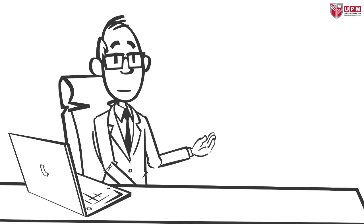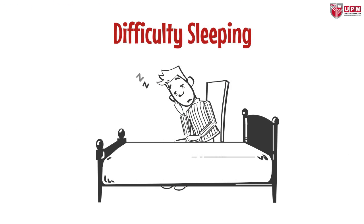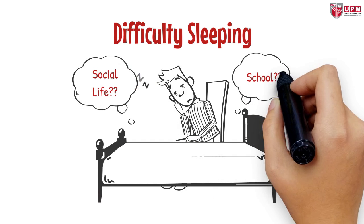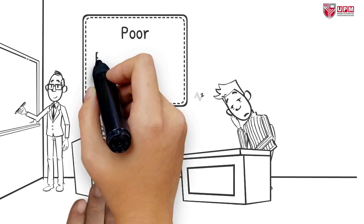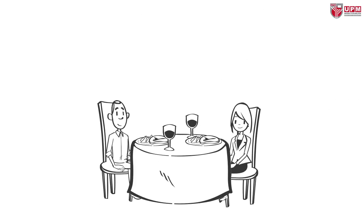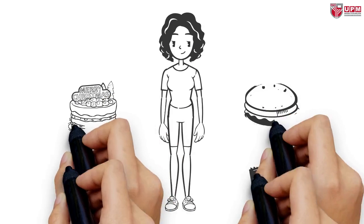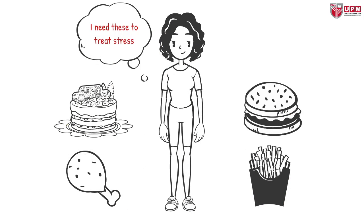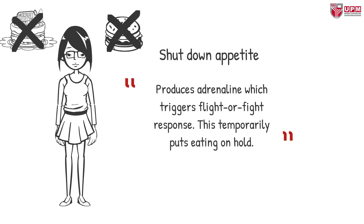Let's talk about the effects of stress on human behavior. The first effect is difficulty sleeping — a person finds it hard to relax due to worrying about social life or school, and lack of sleep can make a person more irritable and leads to poor performance in school. Another effect is changes in appetite. When you are feeling stressed, the body produces cortisol, the stress hormone, which makes one crave high-fat foods because the brain thinks we need energy to treat stress. Stress can also shut down appetite, as the adrenal gland produces epinephrine or adrenaline, which triggers the body's fight-or-flight response and temporarily puts eating on hold.